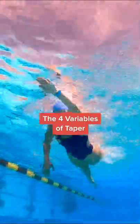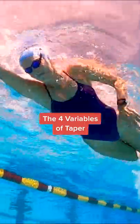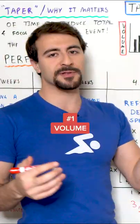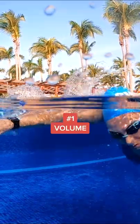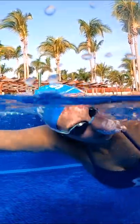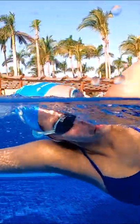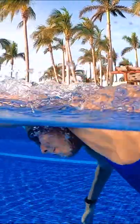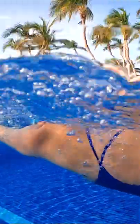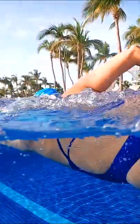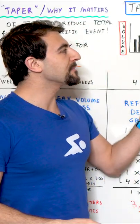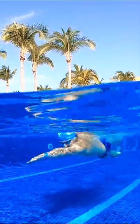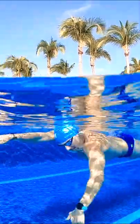The first variable is volume — the total distance that you're swimming. This is oftentimes considered the most important variable in a taper, because the more you swim, the more tired you're going to get. However, those are not directly correlated, and there are three other variables that we have to consider.